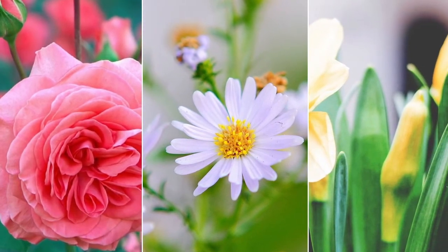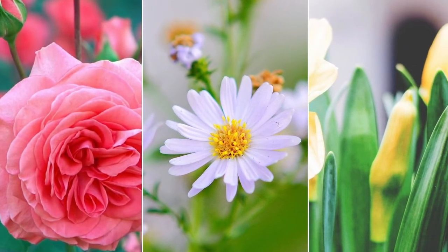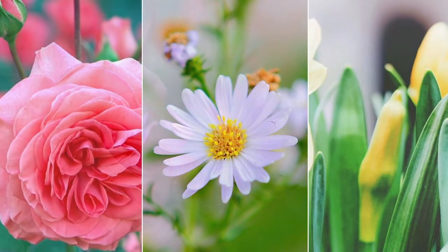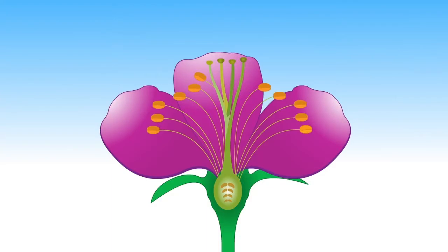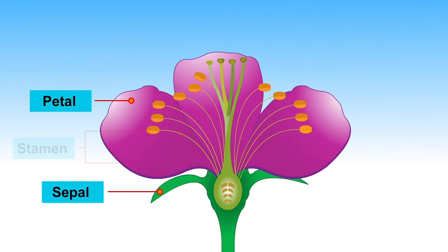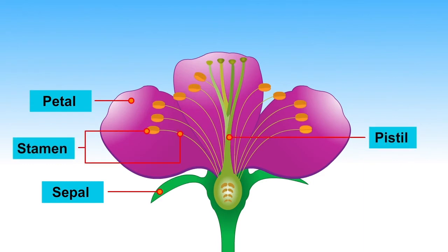Let us learn the parts of a flower. The main parts of a flower are sepals, petals, stamen, and pistil.